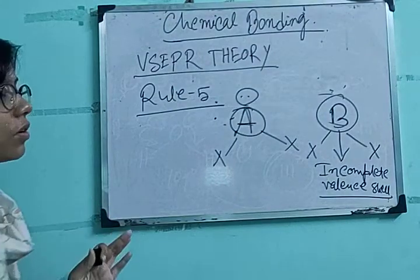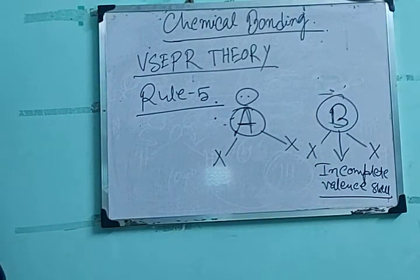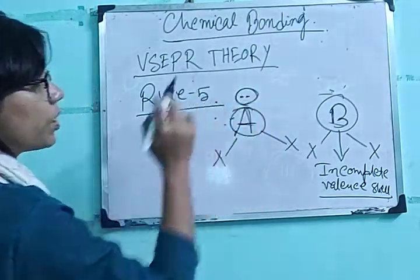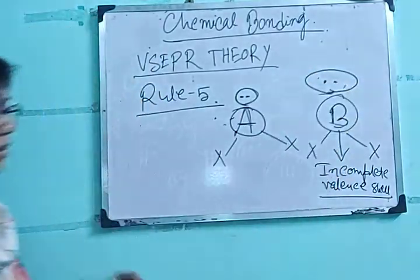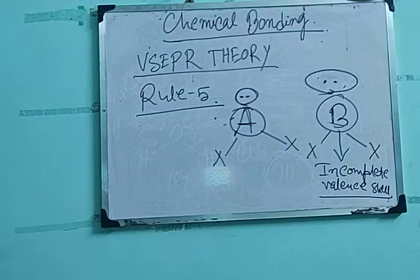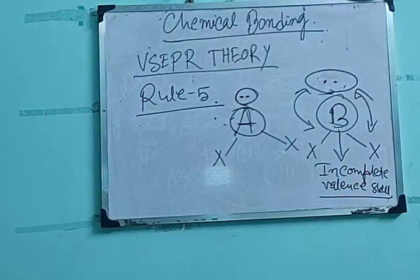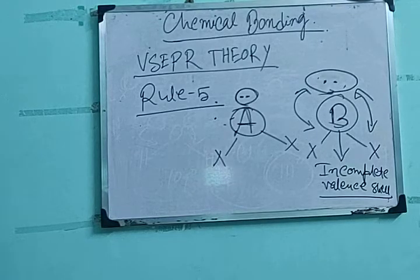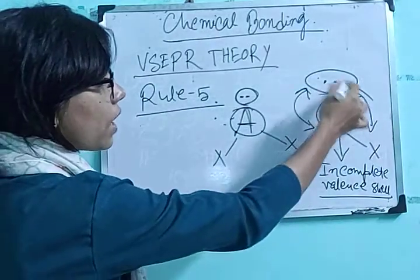Depending on the nature of the central atom, when the central atom has an incomplete valence shell, the lone pair of electrons present over the central atom will occupy more space. So if B has an incomplete valence shell, this lone pair of electrons can occupy more space over the central atom. As soon as it occupies more space, the lone pair–bond pair repulsion increases, and the steric factor will also increase.